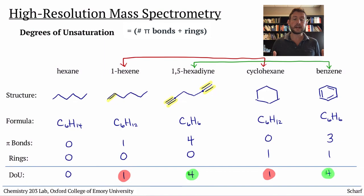This pattern actually holds for all organic molecules. Any two molecules with the same molecular formula have the same number of rings plus pi bonds or degrees of unsaturation.